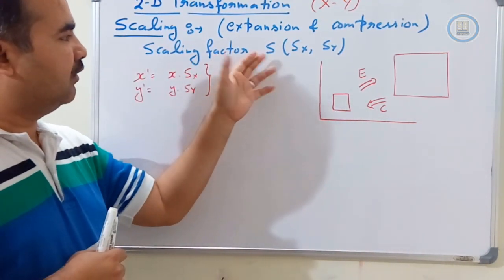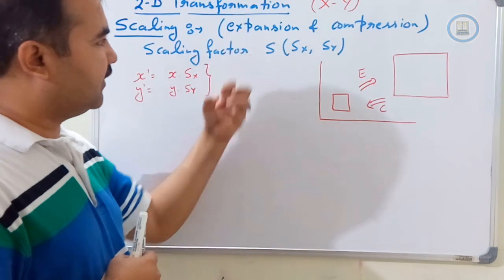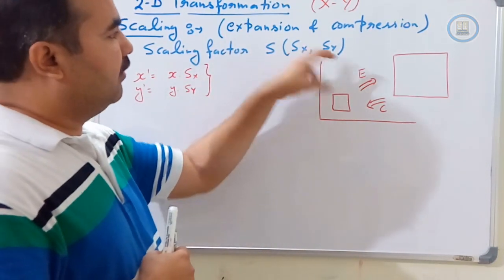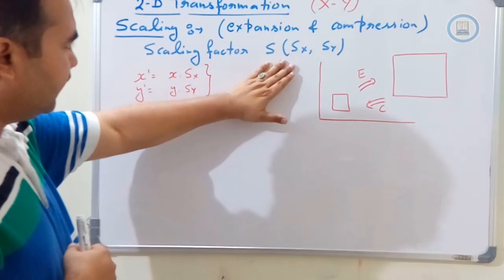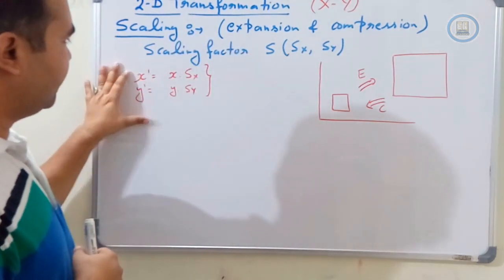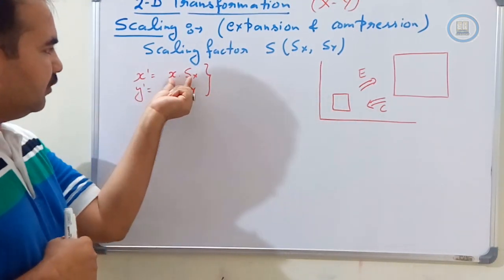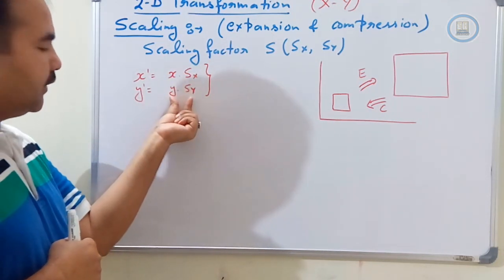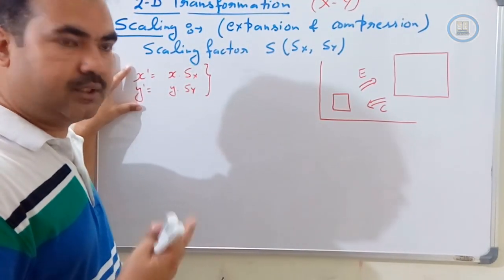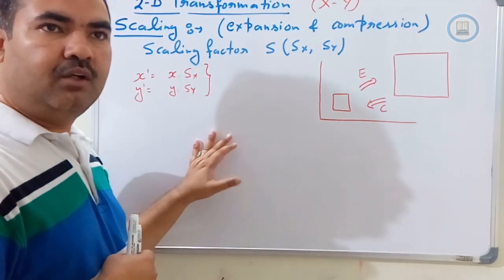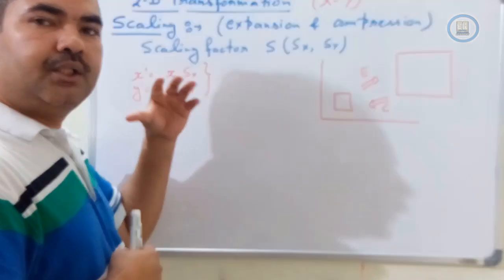We should have one scaling factor: Sx and Sy. Sx is the scaling factor with respect to the x-axis — we need to multiply by it. Sy is the scaling factor for the y-axis or y-direction. The equation for the scaling operation is: x' = x × Sx and y' = y × Sy. This is a direct multiplication to the pixel value. We need to represent this as a matrix operation because we cannot use this equation directly on the graphics processor — we need to convert this equation to matrix format so the graphics processor can calculate it easily.